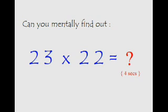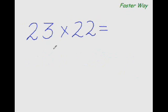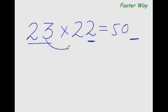Can you mentally find out what is 23 times 22 in 4 seconds? Your time starts now. Your answer is 506. Could you figure out the logic behind it?